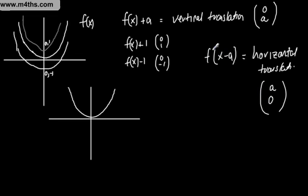And this is quite counter-intuitive for some people. If you have f(x - 2), all that's going to happen, this graph is going to move two places now to the right. Exactly the same shape, so it's gone from here to here at (2, 0).